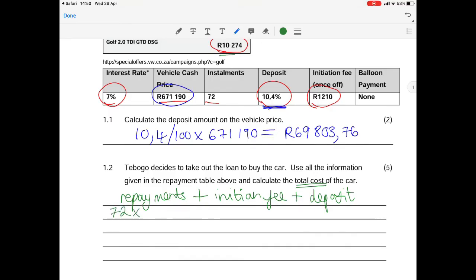So what are your repayments? We know that there are 72 installments and the monthly installment is R10,274 per month. Our initiation fee is R1,210 and the deposit we just worked out is R69,803.76.